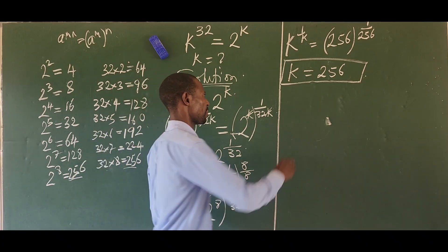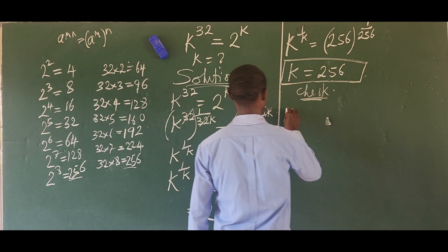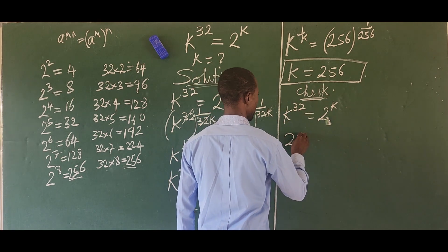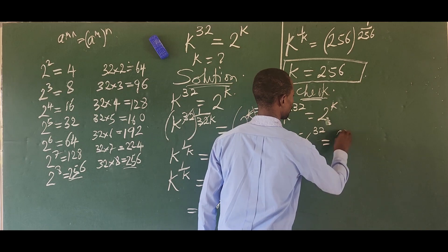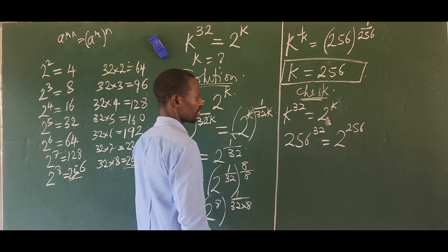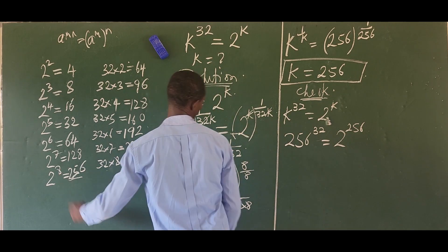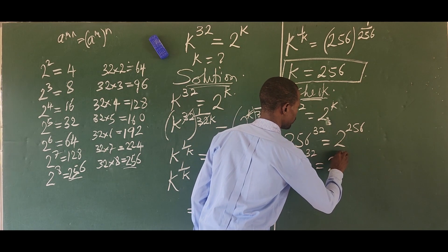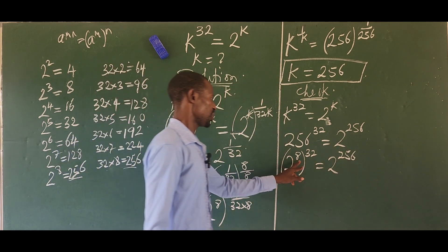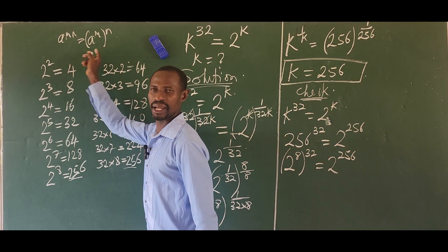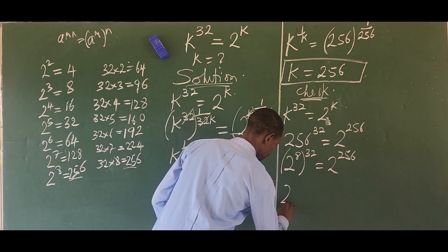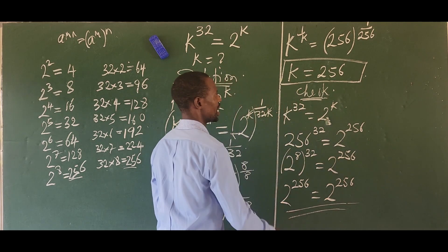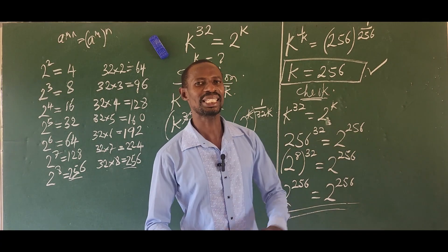Let's do a simple check to verify. We have k to the power of 32 equals 2 to the power of k. So 256 to the power of 32 equals 2 to the power of 256. Since 256 equals 2 to the power of 8, we have 2 to the power of 8 in bracket raised to 32, which by the law of indices gives 2 to the power of 256, equal to 2 to the power of 256. This confirms that k equal to 256 actually satisfies the original equation.